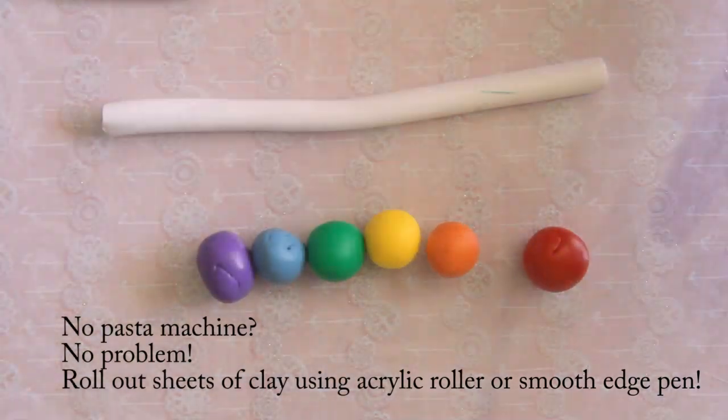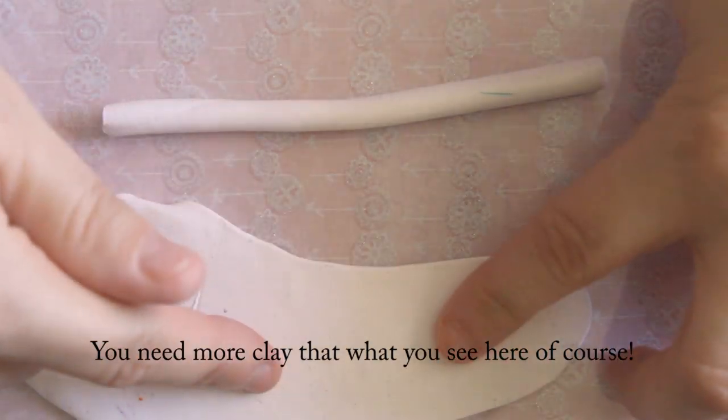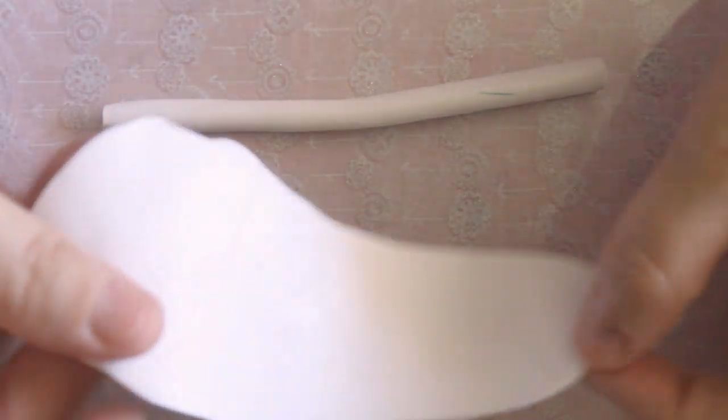These are small ones, you're going to obviously need more, it's just to show you. And you're also going to need some white rolled out into a sheet as well.